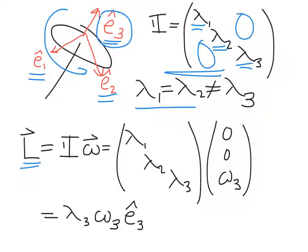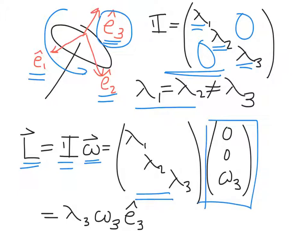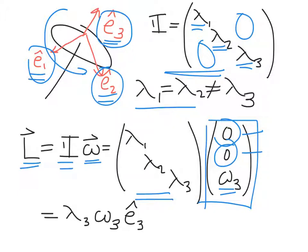We can calculate our angular momentum vector — it's just the moment of inertia tensor applied to the angular velocity vector. We assume that our angular velocity vector has no component along E1 and no component along E2; the only component is along E3. We assume the E1 and E2 components remain zero throughout the dynamics. That corresponds to assuming that the torques due to gravity are weak. Given this angular velocity vector, the angular momentum is just lambda 3 times omega 3, and all of the angular momentum points along the E3 hat direction.